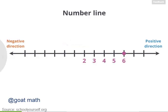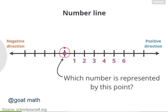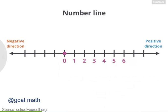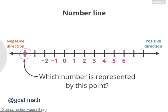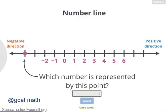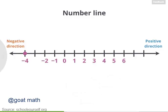As we move in the negative direction, the numbers get smaller. So the tick mark directly left of 2 is 1. The next point to the left is 0. And if we keep going left, we'll have negative numbers, like negative 1 and negative 2. The point 2 tick marks to the left of negative 2 is negative 4.